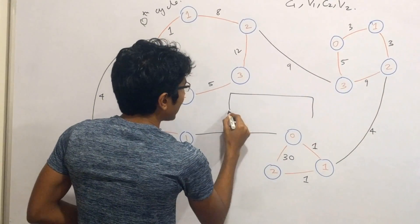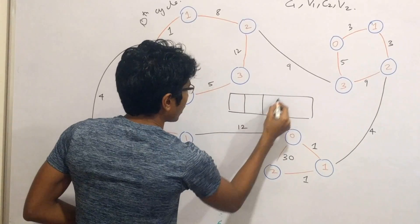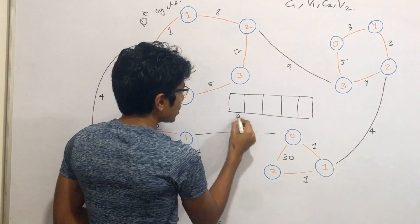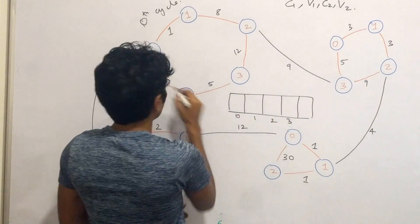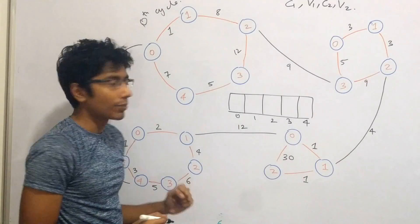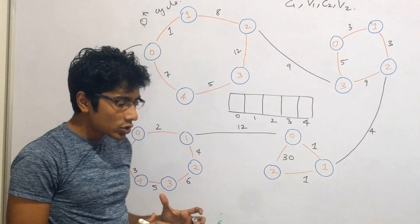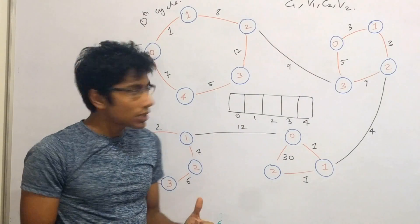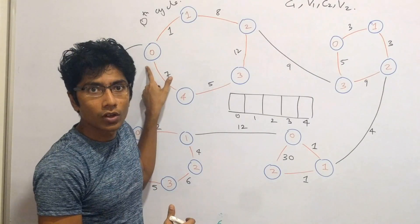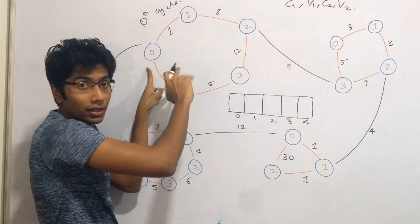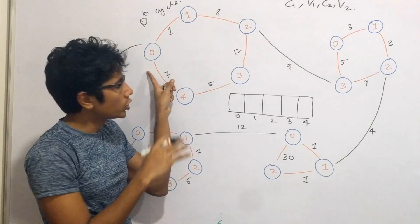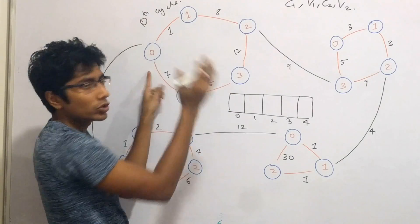Here's how you can do that for a single cycle: take a prefix sum array. You have indexes 0, 1, 2, 3, 4, and what you store here is the distance of every node from node 0 — specifically the clockwise distance. You can choose anticlockwise also, but I'll choose clockwise.